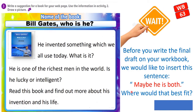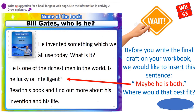Open your workbook page 63 and write a suggestion for a book for your webpage. Use the information and activity to draw a picture. Before you write the final draft, we'd like to insert this sentence: 'Maybe he is both.' The corrected text reads: Bill Gates, who is he? He invented something which we all use today. What is it? He is one of the richest men in the world. Is he lucky or intelligent? Maybe he is both. Read this book and find out more about his invention and his life.